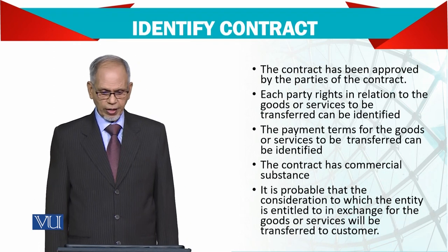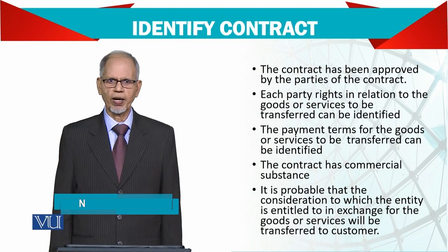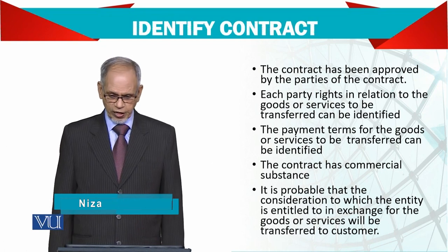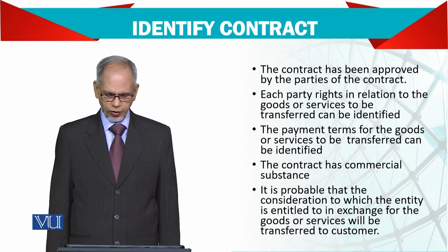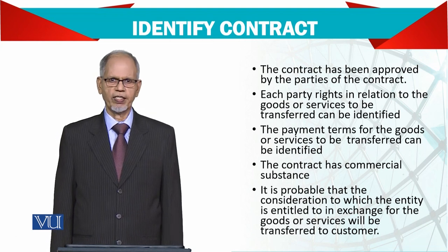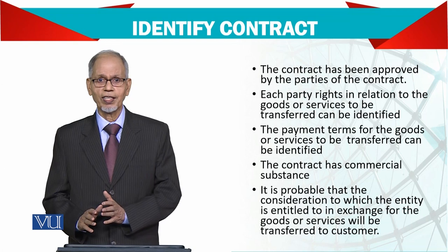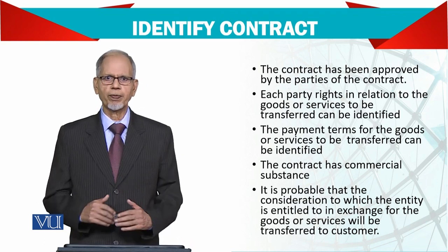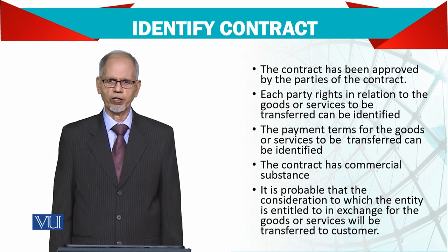Now, one by one — identify the contract. The contract has been approved by the parties of the contract. Both parties should agree in writing, or maybe sometimes with understanding. Each party's rights in relation to the goods or services to be transferred can be identified. The payment terms of the goods and services to be transferred can be identified. The contract clearly mentions what goods and services you want to buy and are supposed to supply. The contract has a commercial substance — there should be a profit motive. It is probable that the consideration to which the entity is entitled in exchange for goods and services will be transferred to the customer.